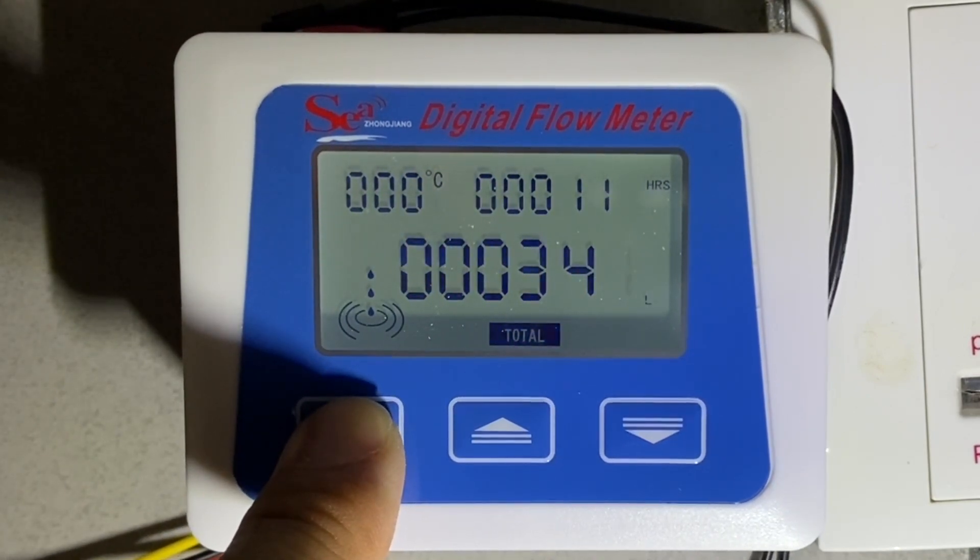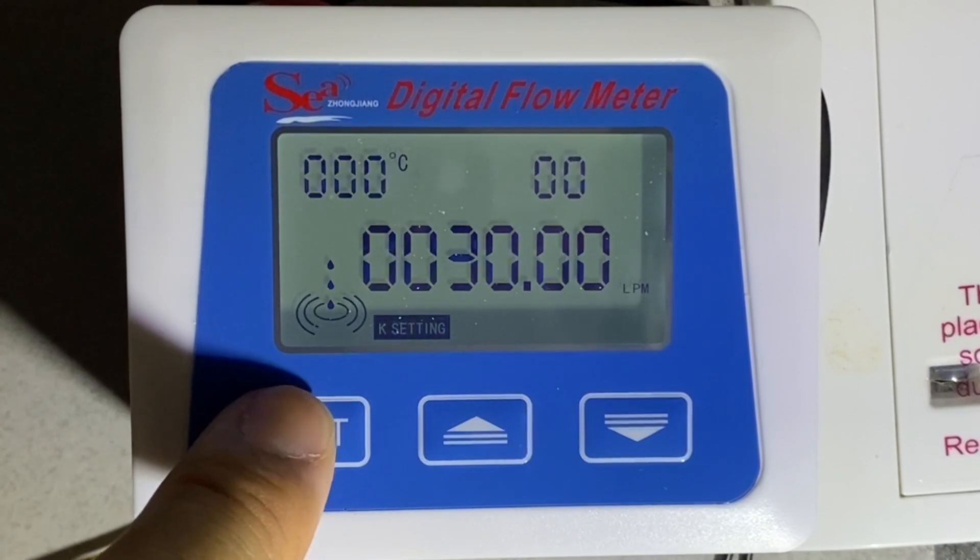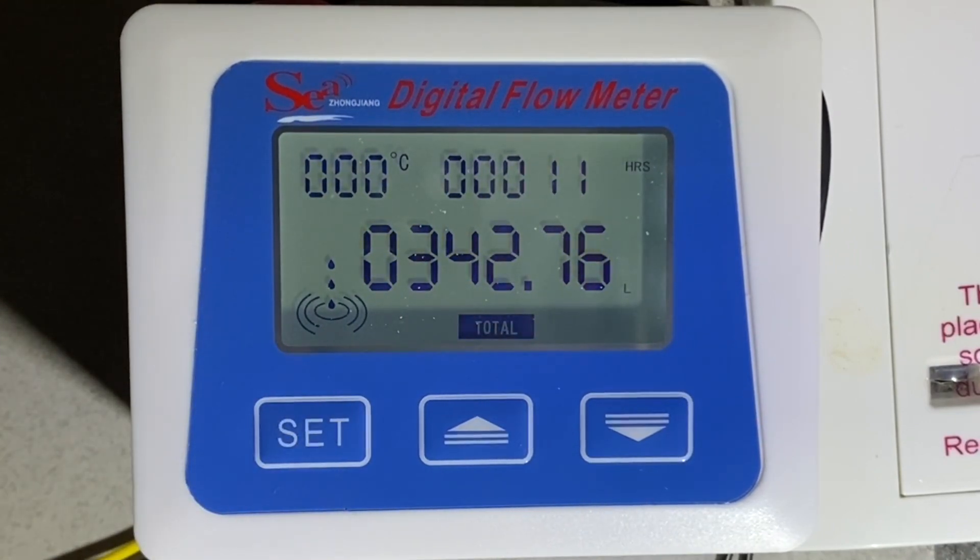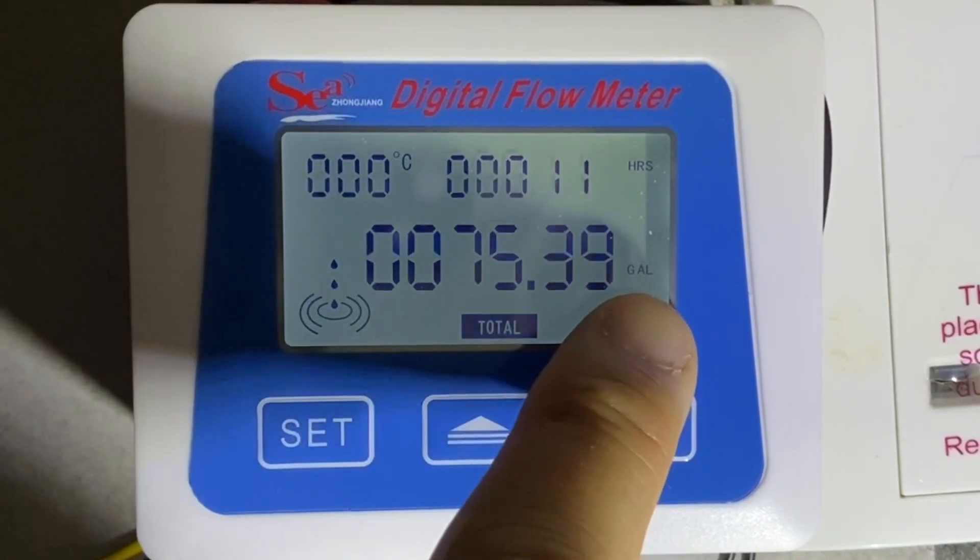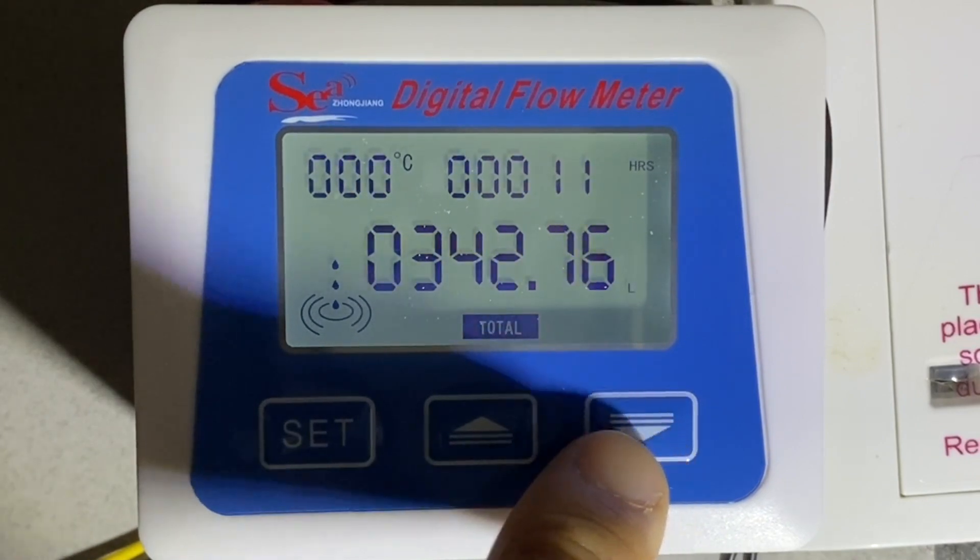Now, the maximum digit is actually 100,000 liters you can measure using this flow meter. And under total mode, you press the down button to change liters to gallons if you prefer to be in gallons. I prefer liters.